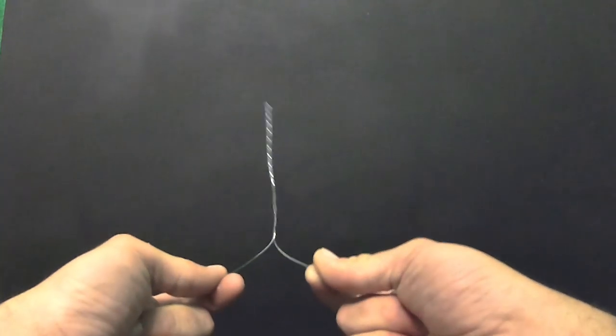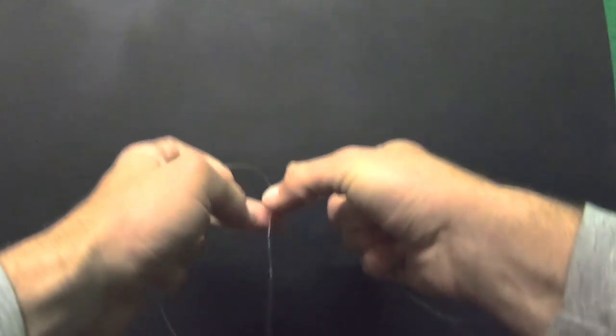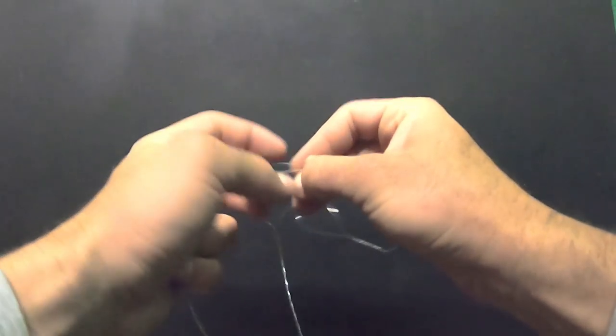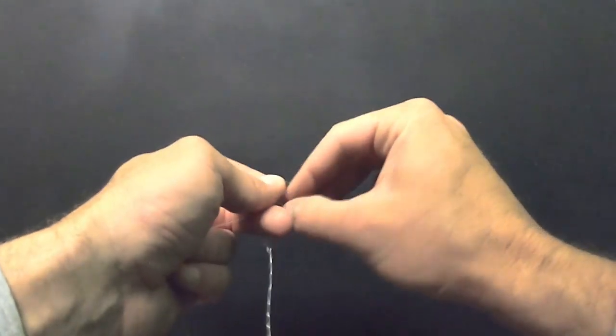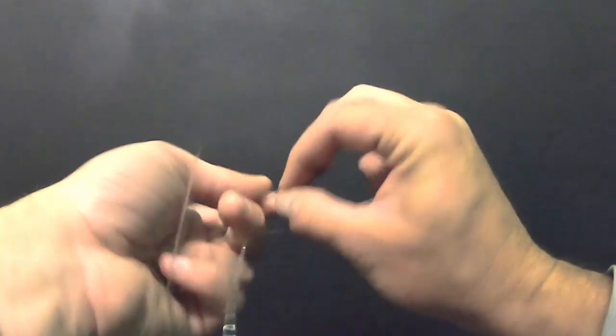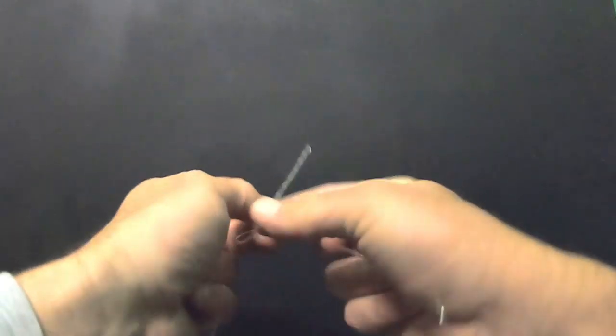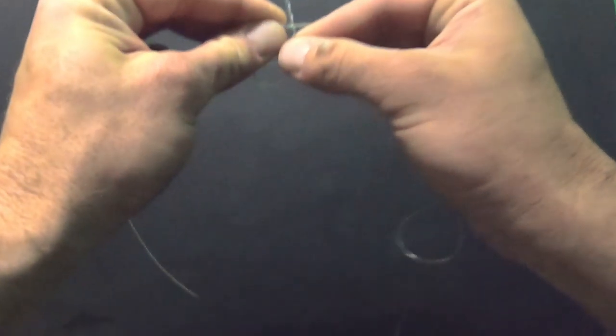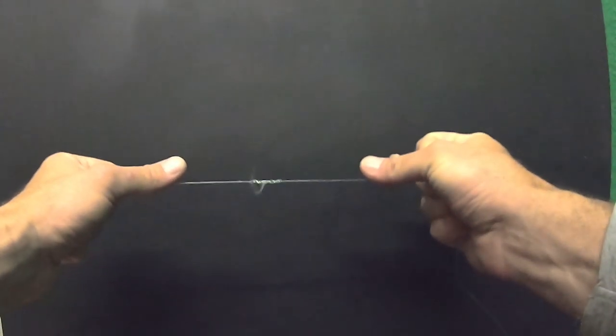So once I have about that much again I make a little loop. Do my six twists and then stick that end in through the loop. Lube it up and pull it tight.